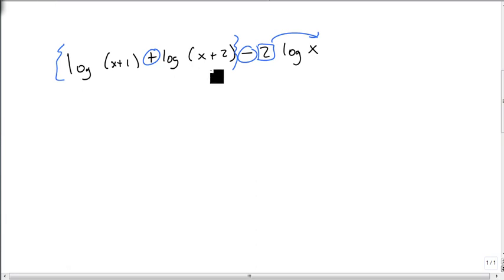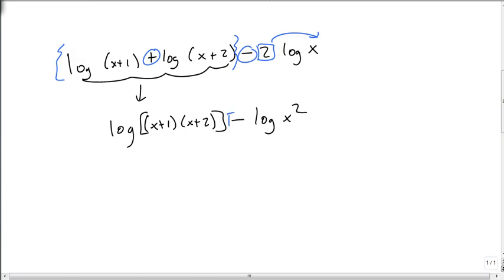So these will combine into a single log of x plus 1 times x plus 2. And my power goes up to make log of x squared. Now I look at my minus and I say, oh, that's a division. So this becomes log of x plus 1 times x plus 2 over x squared.